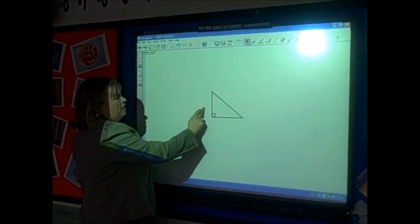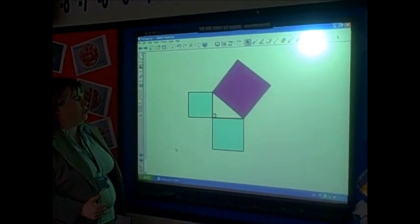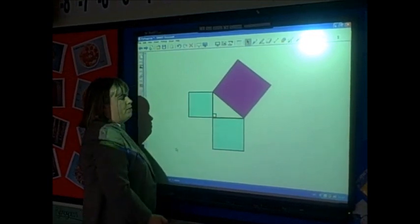So what did Pythagoras actually tell us? He told us that if we draw a square onto each side of a triangle, then the area of the two smaller squares is equal to the area of the biggest square.